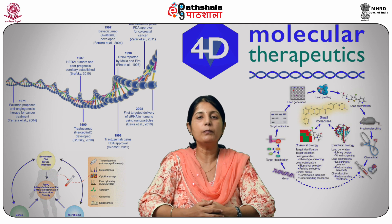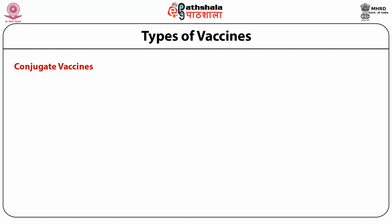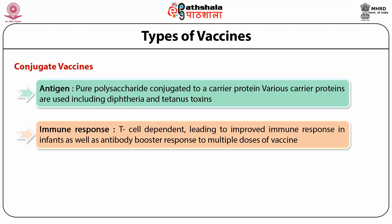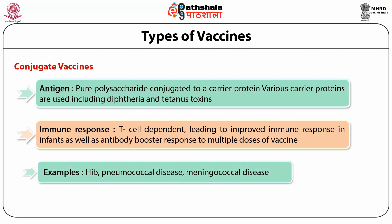Conjugate vaccines overcome the disadvantages seen with pure polysaccharide vaccines by conjugating the polysaccharide to a carrier protein — such as diphtheria or tetanus toxoids. Conjugation changes the immune response from T-cell independent to T-cell dependent, leading to improved immune response in infants as well as an antibody booster response to multiple doses. The first conjugated vaccine was developed against Haemophilus influenzae type B. Later, conjugate vaccines were developed for pneumococcal disease in 2000 and meningococcal disease in 2005.